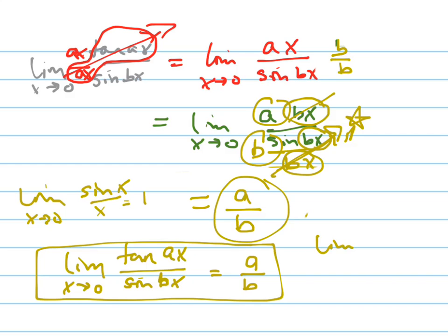So if you have something like, what's the limit as x goes to 0 of tangent 2x over sine 5x, the answer's just two-fifths. Thank you.